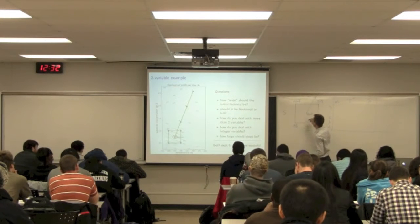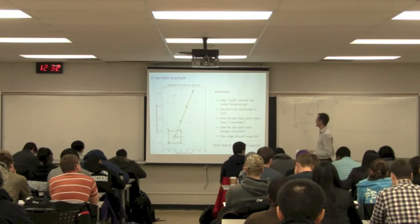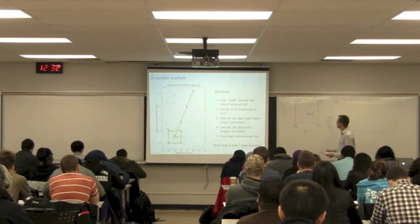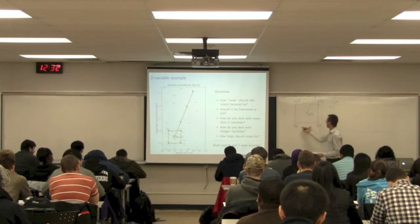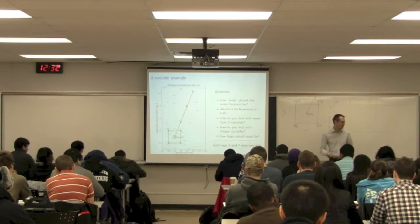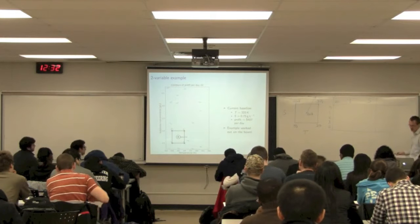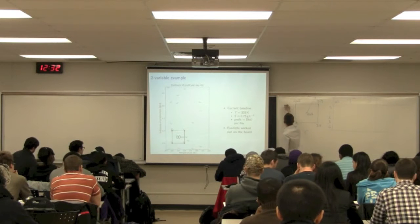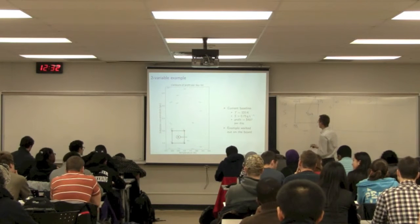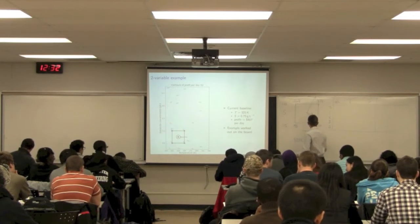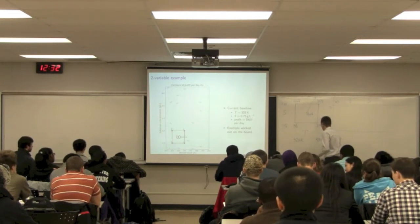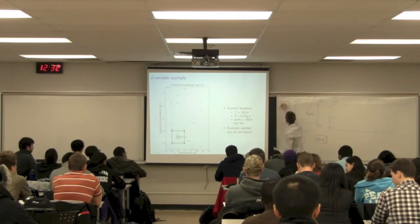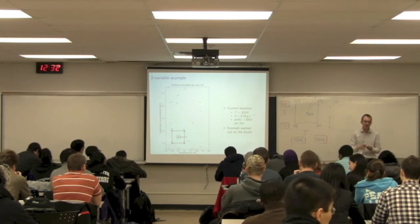We had a baseline where we were operating, and at that baseline we were getting $407 per day. In the last class we had a factorial design around that, and we ran a 10 Kelvin range on the temperature variable, and a 0.5 grams per liter range on the substrate concentration. To recap: on substrate concentration we ran 0.5 at the low level and 1.0 at the high. In actual units, on temperature we had 320 Kelvin at the low level and 330 Kelvin at the high. This is in real-world units in the table.